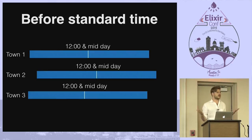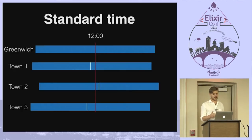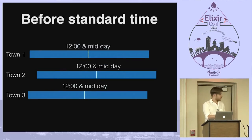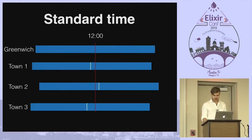12 o'clock in one town and not so far away in another town, 12 o'clock would not be at the same point in time. Then you had railways, and that wasn't very practical. So in Greenwich, England, they measured time in a certain way, and all the towns would coordinate with Greenwich. Before standardization the midday line was very wide; with standard time, 12 o'clock is not going to be exactly the middle of the day for towns slightly east or west, but it makes things easier to communicate.